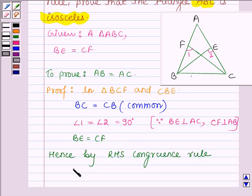By RHS congruence rule, we have triangle BCF congruent to triangle CBE which further implies that angle B is equal to angle C by CPCT.